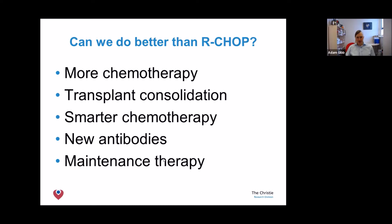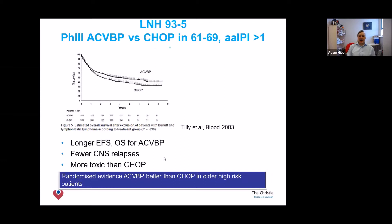The French designed a variation on R-CHOP called ACVBP, which involves hospital admission over up to 19 weeks with intensive chemotherapy by prolonged infusion. In a randomized trial they claim it's superior to CHOP. However, one of the drugs is unavailable elsewhere, and 19 weeks in hospital is not feasible for most patients, particularly older UK patients. So while the French claim it's better than CHOP, it has never really taken off internationally.